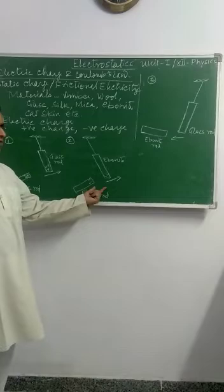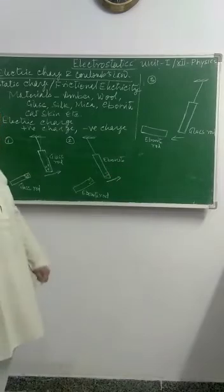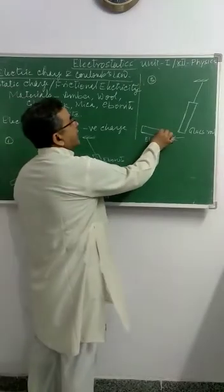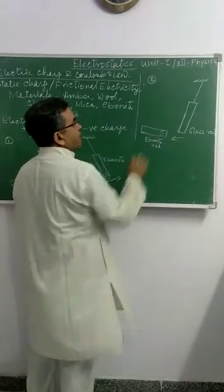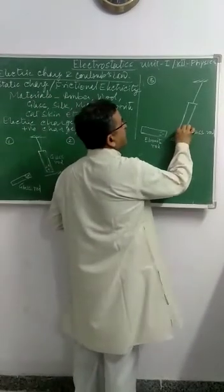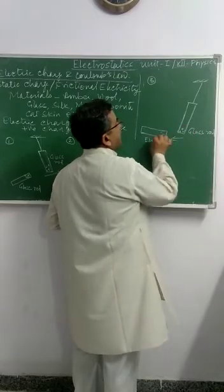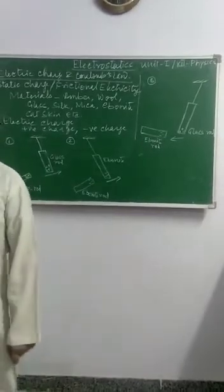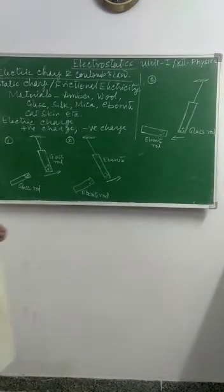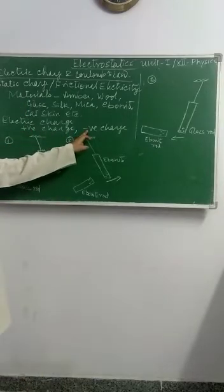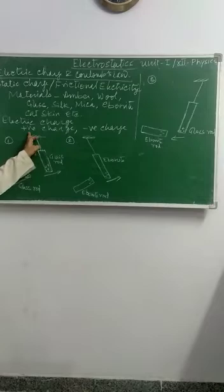When negative and negative are taken towards each other, they repel each other. The Amorite rod rubbed with the cat skin has a negative charge, and the glass rod which has a positive charge rubbed with silk — when brought closer, they attract each other. On the basis of these experiments, we can divide the electric charge into two categories: positive charge and negative charge.